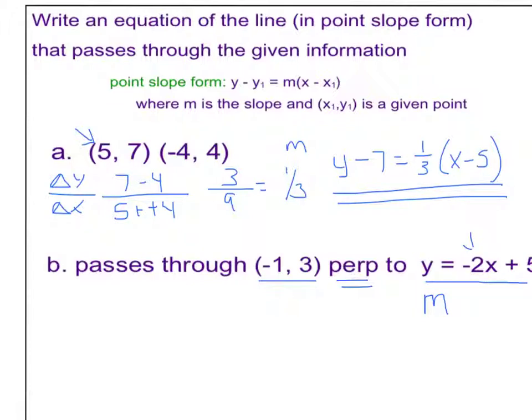So if my slope is negative 2, a line that is perpendicular to that, it's negative, so my new slope is positive. This is 2, so my new slope is 1 half. It's reciprocal. So now I have my slope and I have my point.